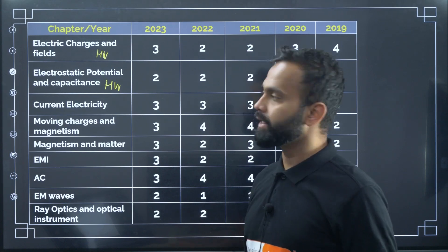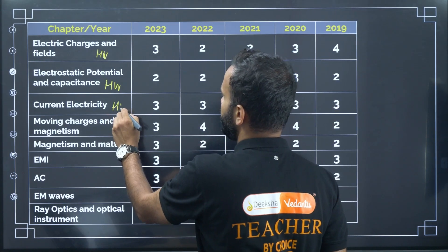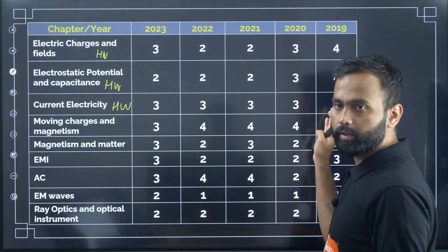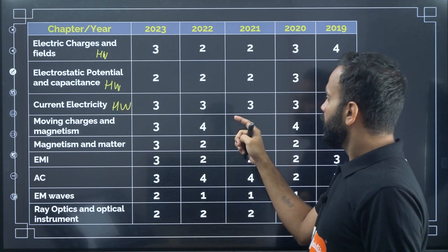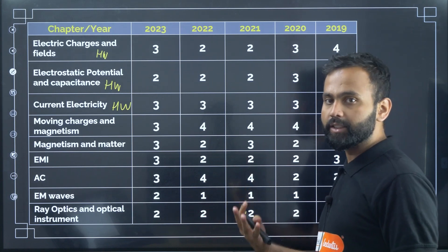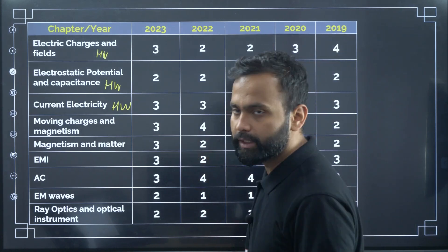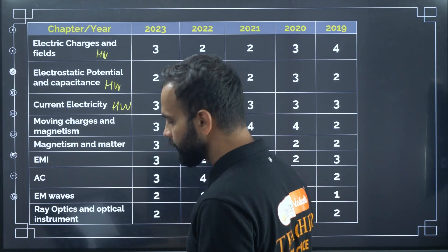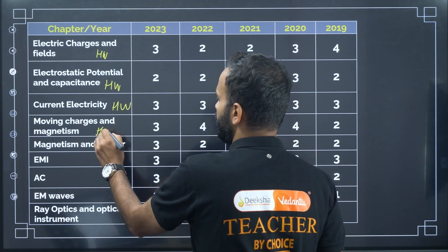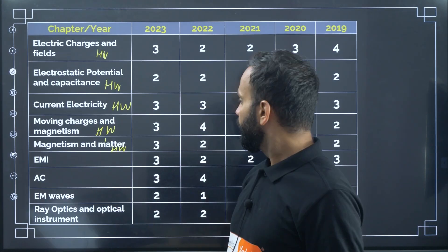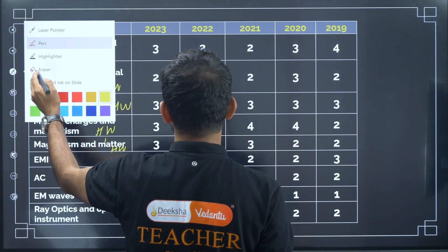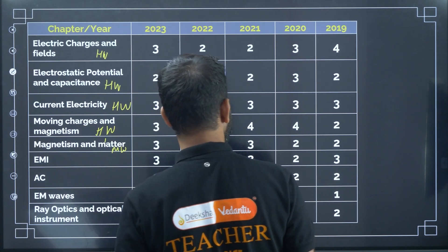Current Electricity is also a high weightage chapter — every year they ask three to four questions. If you look at 2017-2018 papers, they asked four questions. Current Electricity is a very important chapter for COMET K 2024. Moving Charges and Magnetism is also a very important high weightage chapter. Magnetism and Matter is a moderate weightage chapter.